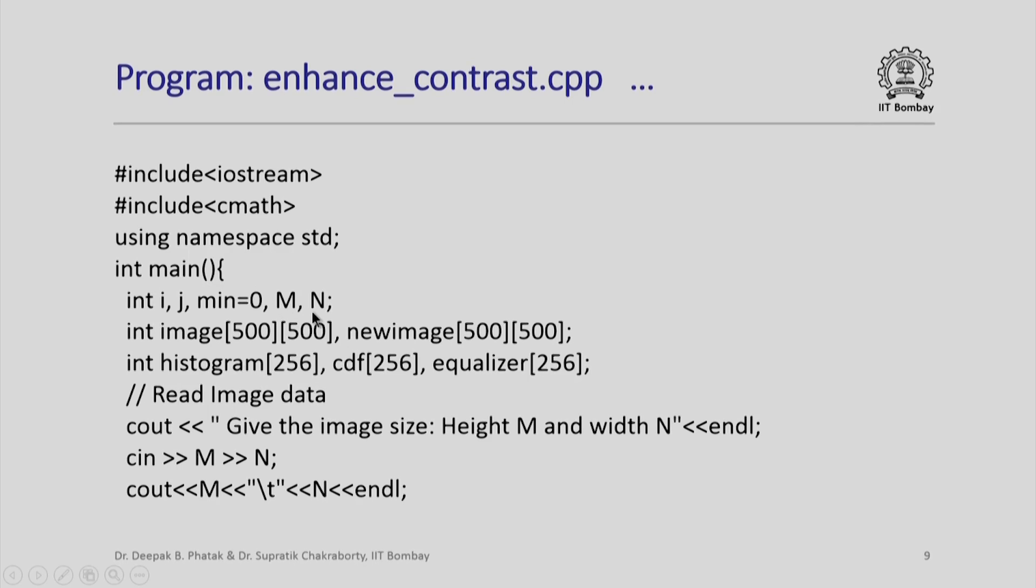These are the variables that I have declared. Notice two arrays: image[500][500] will store the original image, newimage[500][500] will store the new image after changing the pixel values to get contrast enhancement. Notice three arrays which I use to store histogram, to store the cumulative distribution function values, and to store what I call the equalizer. This equalizer is the value which we obtain after applying the formula. So if a pixel value is say 58, I will just go to the 58th entry into this equalizer array and that value will be the new pixel value.